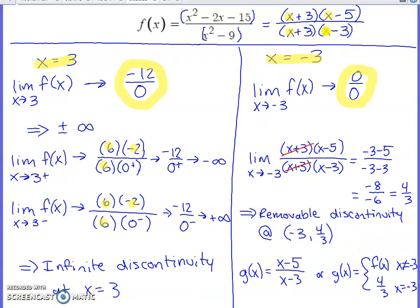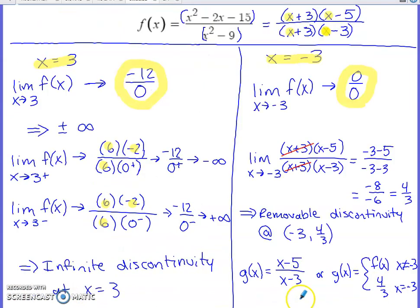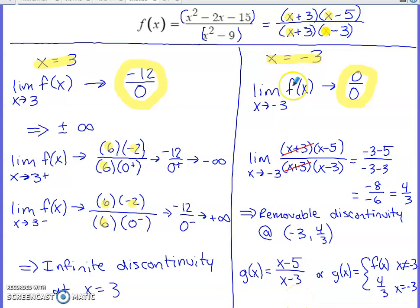The last task is to remove the removable discontinuity by redefining the function. After canceling the common (x plus 3) factors, what remains is only undefined at 3 — no longer undefined at negative 3. So the simplified expression after cancellation removes the discontinuity at x equals negative 3. This is the most frequently used approach.